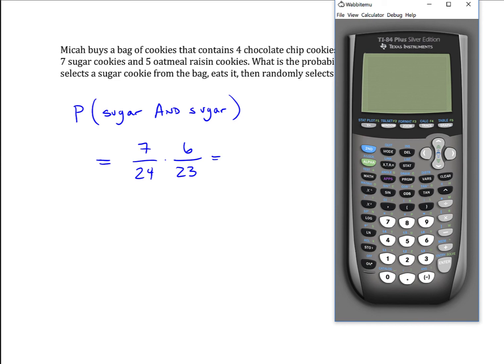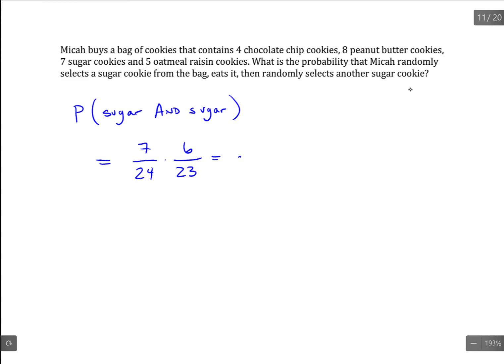So it changes a little bit. Now we take 7 over 24 times 6 over 23, which gives us a probability of 0.076.